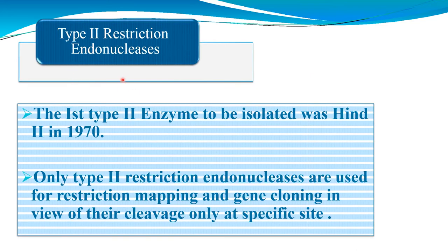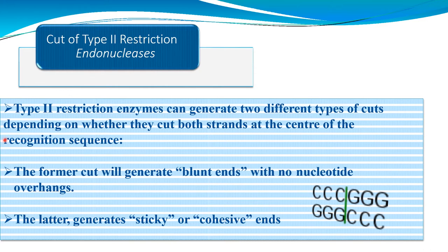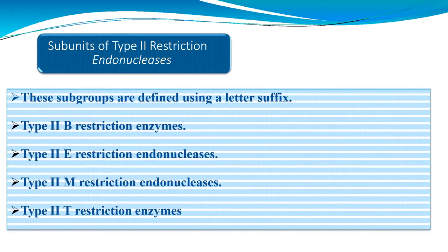The first Type 2 enzyme to be isolated was HindII in 1970. Type 2 restriction endonucleases are the only type used for restriction mapping and gene cloning, due to their cleavage at specific sites. They can generate two different types of cuts: if both strands are cut at the center of the recognition sequence, blunt ends with no nucleotide overhang are generated; otherwise, sticky ends or cohesive ends are generated.